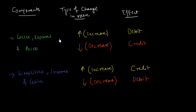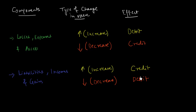Before signing off, please take a look at this chart where I have written down the rules for debit and credit with respect to a transaction. For losses, expenses, and assets: every increase in value → debit; every decrease in value → credit. For liabilities, incomes, and gains: every increase in value → credit; every decrease in value → debit.